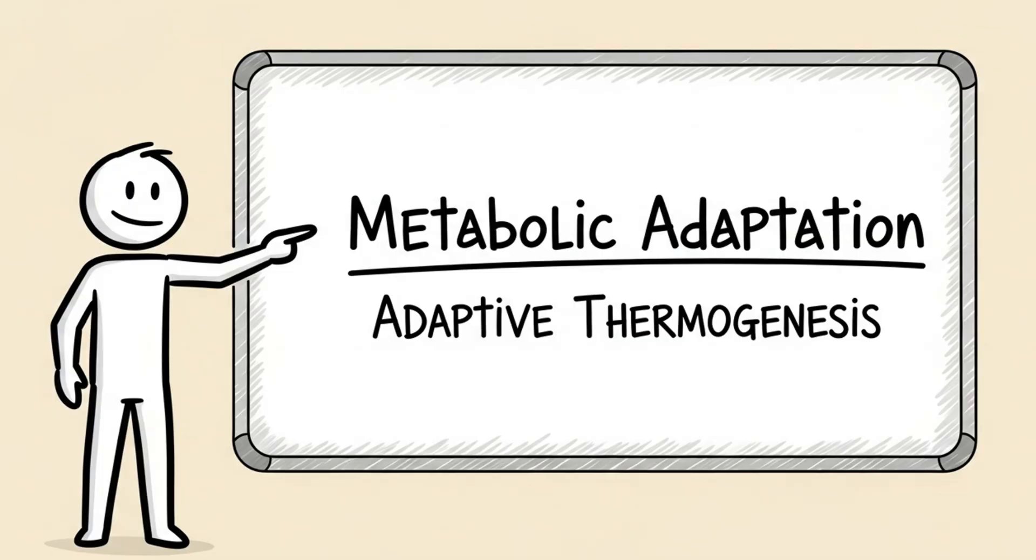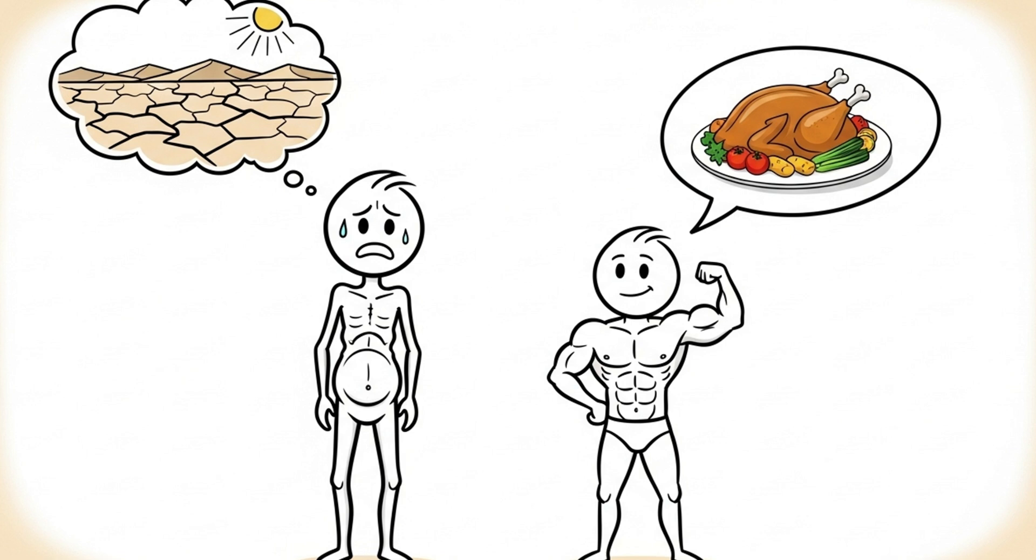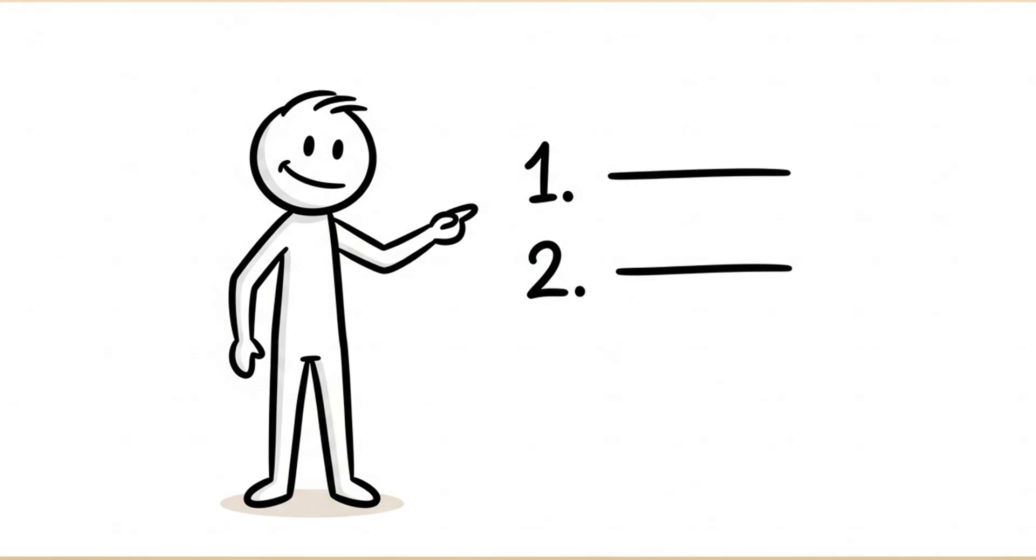This is called metabolic adaptation, or adaptive thermogenesis. Your body is an incredibly smart survival machine. It doesn't know you're trying to get a six-pack for summer. It thinks you're in a famine and you're starving, so it fights back to protect you. When you consistently diet, two things happen.